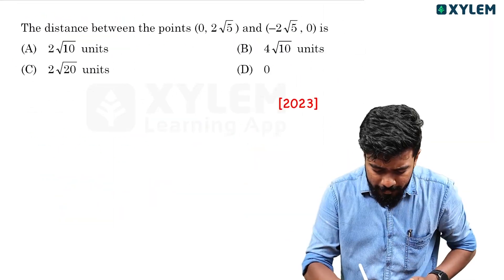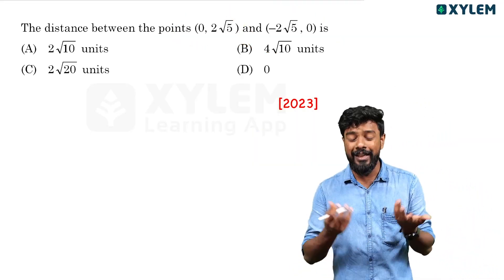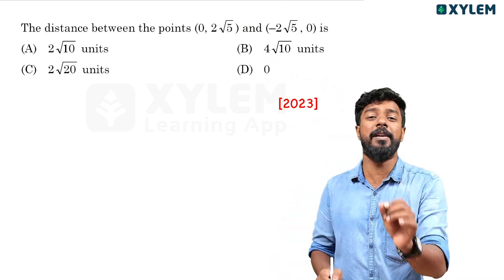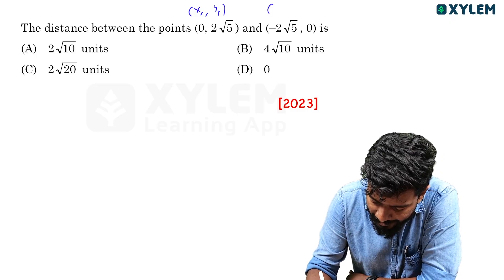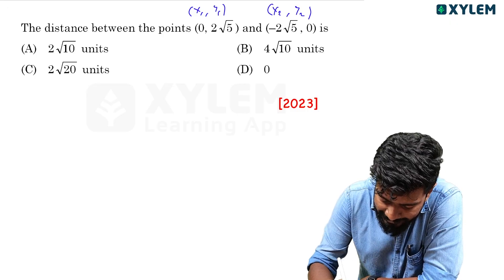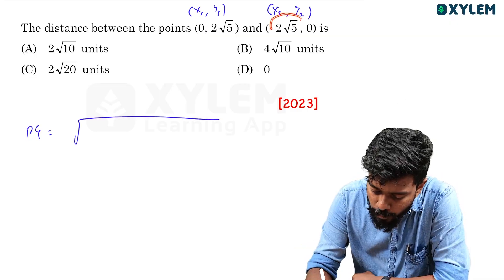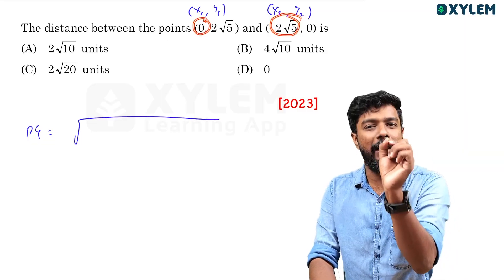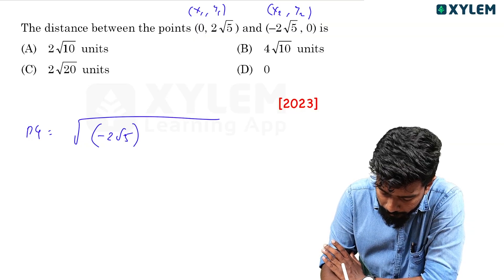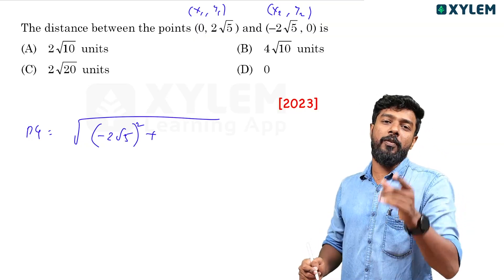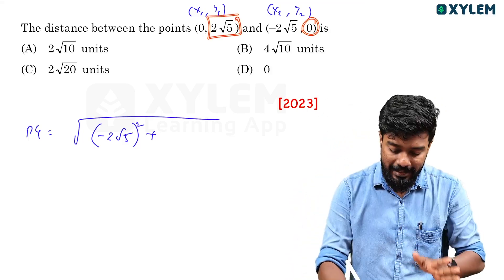Now let's apply the formula. Find the distance between the points (0, 2√5) and (-2, √5). Substituting into the formula: √((−2 − 0)² + (√5 − 2√5)²). The first term becomes (−2)² and the second becomes (−2√5) whole square.